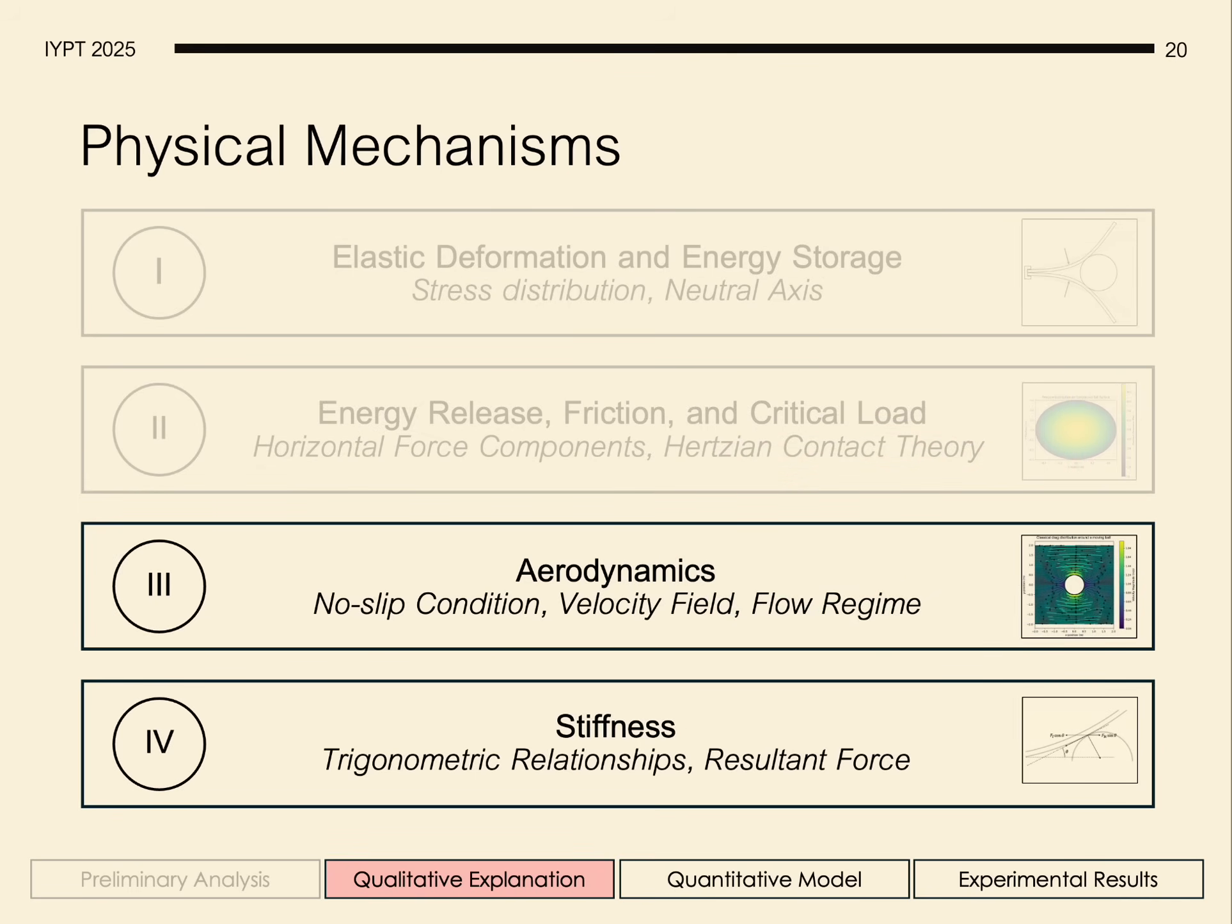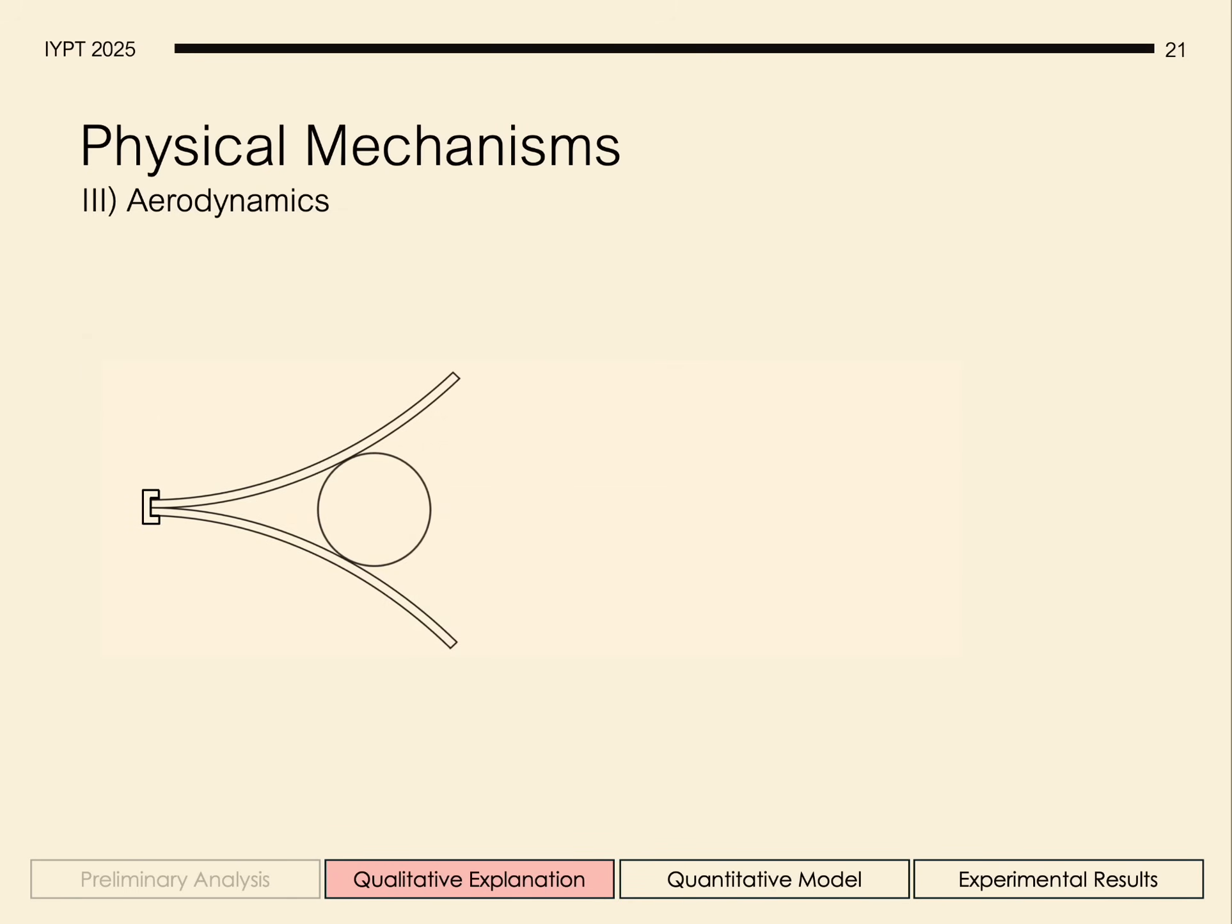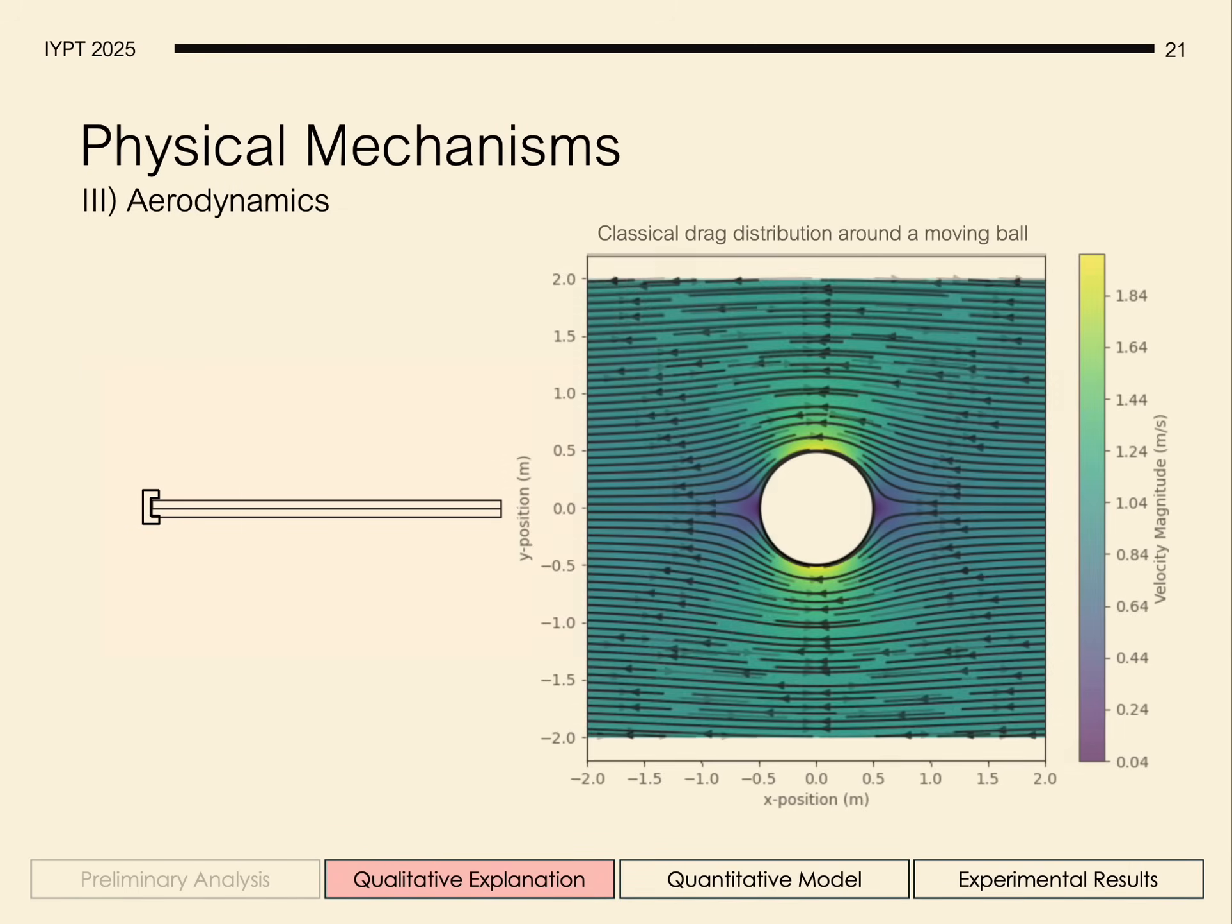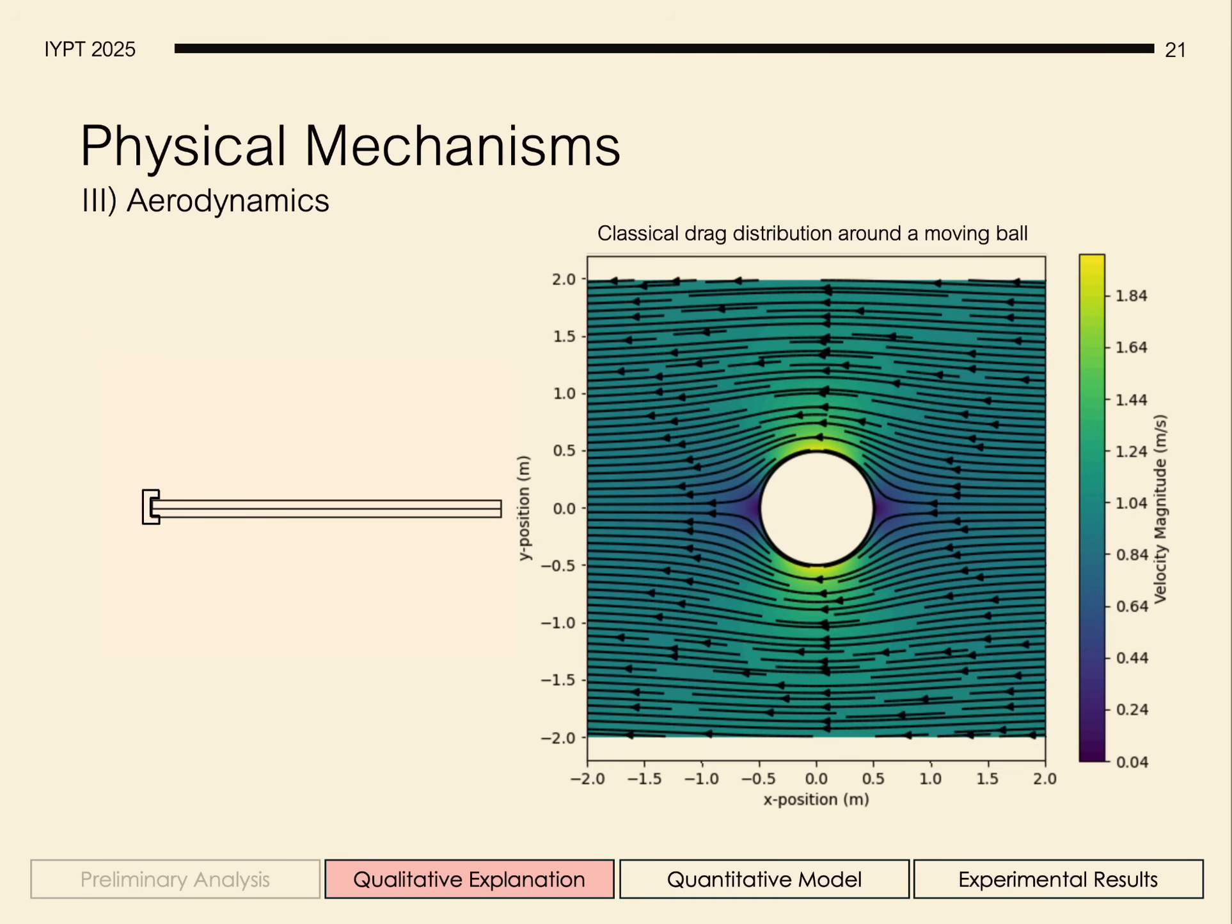Moving on to the aerodynamics. As the projectile is ejected, there is drag. The velocity, geometric properties, and material properties of the ball determines the regime of flow, and while the simulation shows the classical drag distribution around a moving ball, the drag distribution as the ball moves through the rulers is much more complex, with the no-slip condition needing to be satisfied.